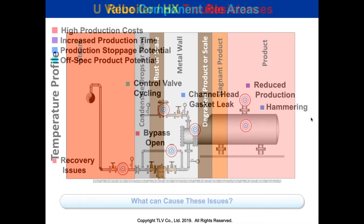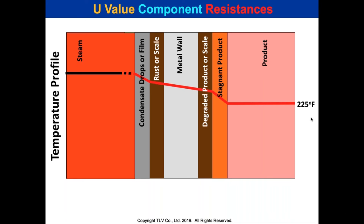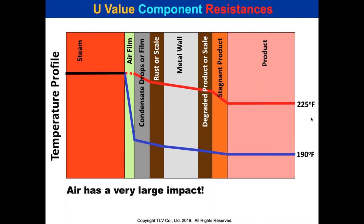One cause is air. If we look at the temperature profile — without significant air we get high temperature, but a film of air can dramatically drop temperature. Here's a key question: a little bit of air as an insulating conductor is equivalent to how thick a copper layer? It's a 13,000 times difference — equivalent to 44 feet of copper thickness. If you're having problems with any heat exchanger or reboiler, one of the first things to look at is air venting — a really simple and inexpensive fix.